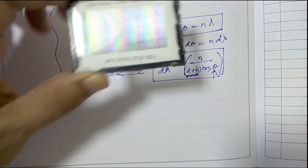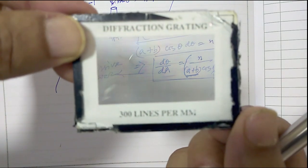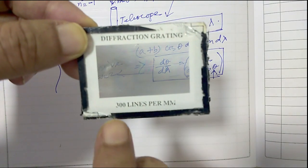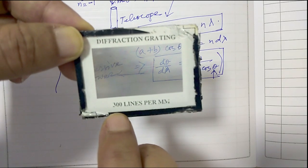For every grating, there is one particular information that you will always see. It's written there. For example, in this case, it's 300 lines per millimeter.